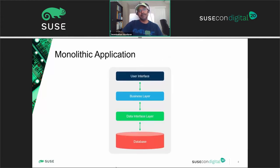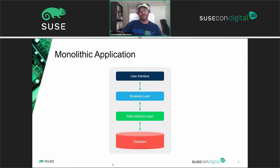This is a typical view of a monolithic application — it has a user interface, a business layer, a database interface layer, and a database. Database developers, business logic developers, and UI developers all have to work together, tie everything up, test it, validate it, and then publish it for rollout. When operators receive it, they have to test it, validate it, put it in their sandbox, make sure everything works, and then do a rollover — which is pretty tedious.